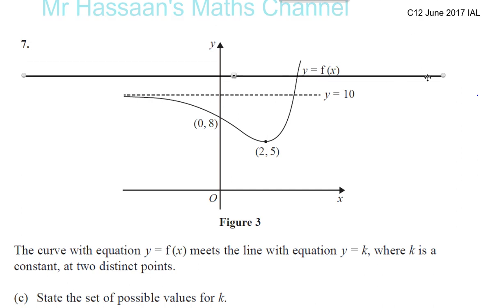So you can see that the places where there will be two distinct solutions are everywhere greater than Y equals 5 and less than Y equals 10.